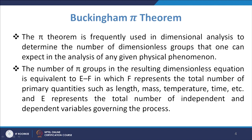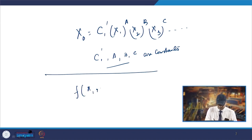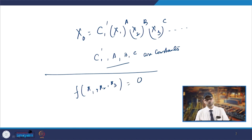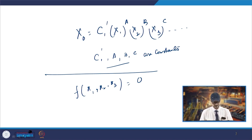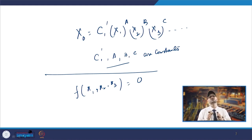In the case of the Pi theorem you will have f(π₁, π₂, π₃) = 0. They are the independent dimensionless products of the arguments. The number of such groups equals E minus f, and this way you calculate the Pi groups.